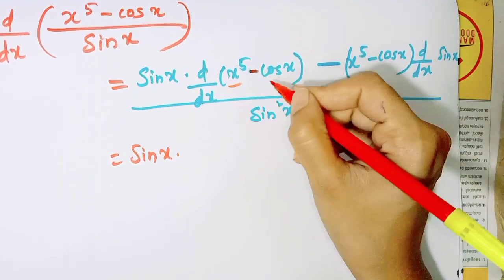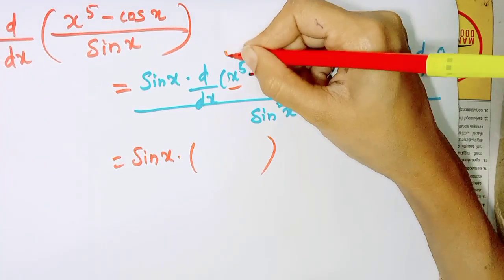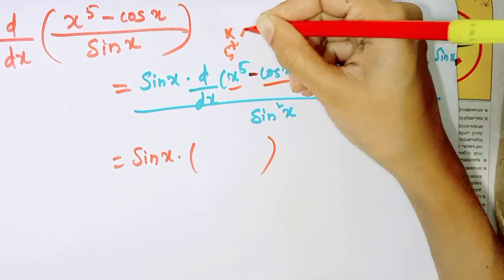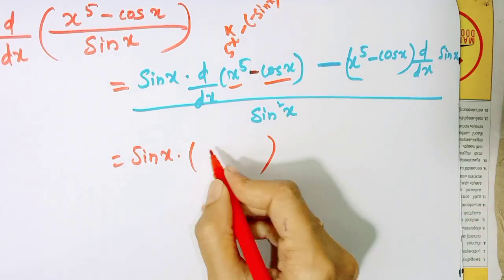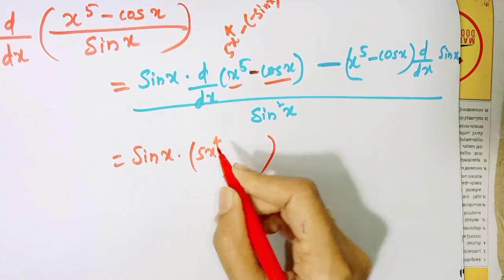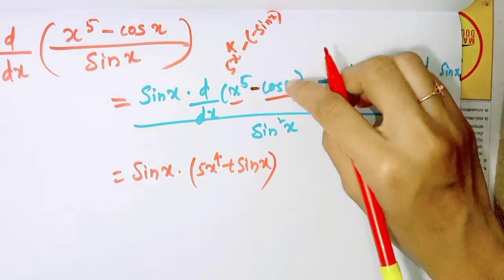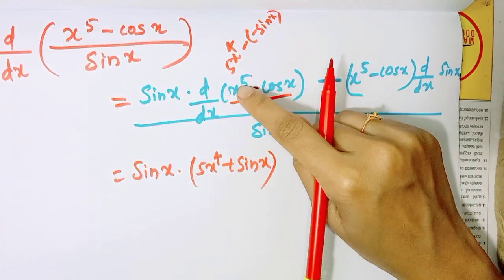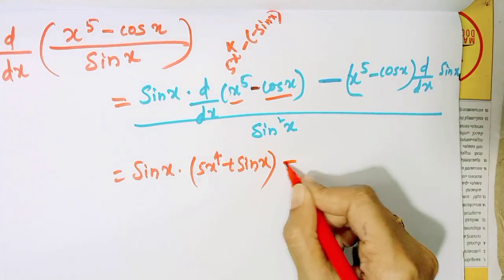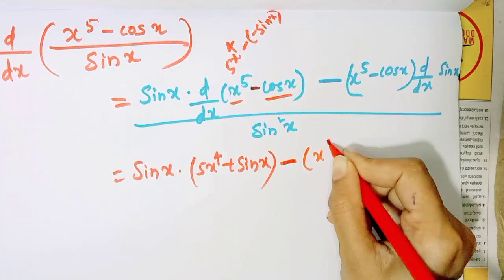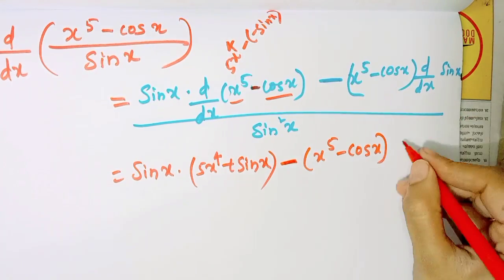The derivative of x raised to 5 is 5x raised to 4. Now minus cos x gives minus sin x — but since we have a negative sign, minus sin x becomes plus sin x. So the derivative is 5x raised to 4 plus sin x. Then sin x multiplied by x raised to 5 minus cos x.